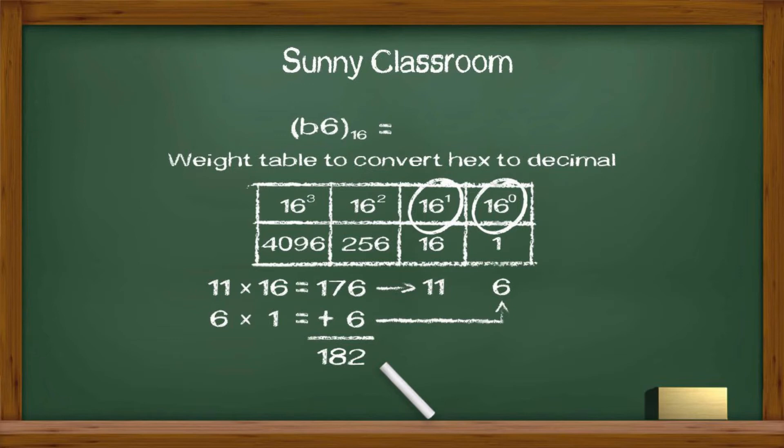176 plus 6 and we get 182. Thus, the hex number B6 is 182 in decimal.